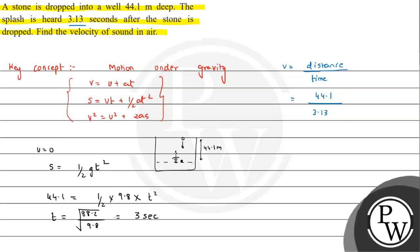So we have to do 3.13 minus 3. We have to do 3.13 minus 3 seconds because the sound is traveling for 3.13 minus 3 seconds. So this will be 44.1 divided by 0.13.